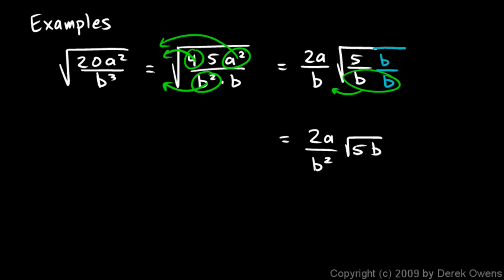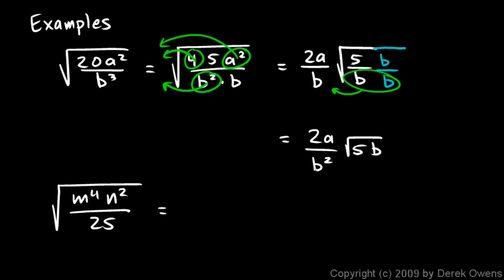Okay, that's our answer. Let's look at the next one. The next one is the square root of m to the fourth n squared over 25. Well, everything under here is a perfect square, so we simply square root them. The square root of m to the fourth is m squared. The square root of n squared will be n. And the square root of 25 will be 5. These two will be in the numerator and this will be in the denominator. We just square root all of them.